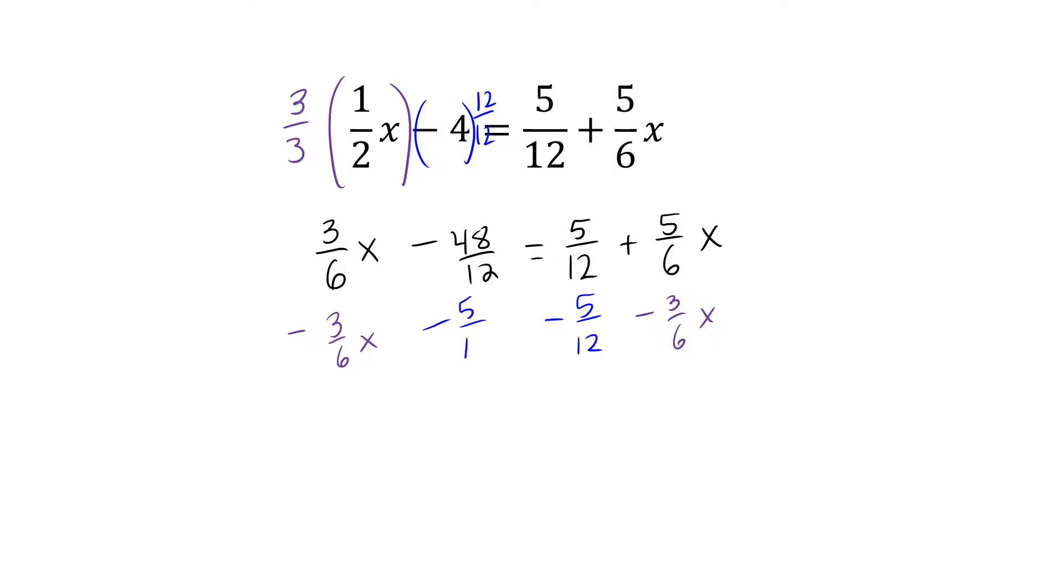This allows us to have the constant term on the left side of the equation and the variable term on the right side. When we subtract, we end up with negative 53/12 on the left side of the equation and 2/6x on the right side.